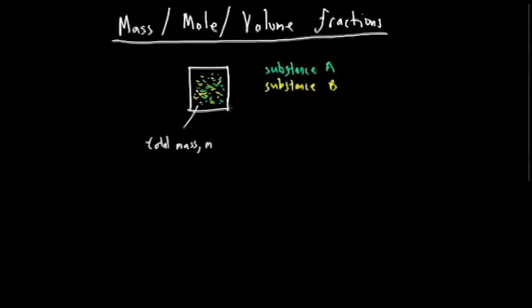And each of the components have their masses as well. So substance A has its mass, mass A, and substance B has its mass, mass B. So if you add up the mass of A plus the mass of B, that's going to give you the total mass inside the system.